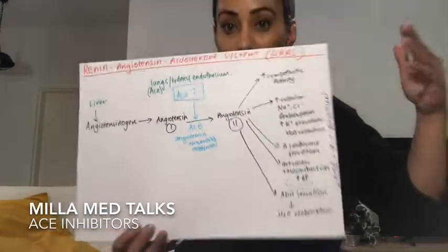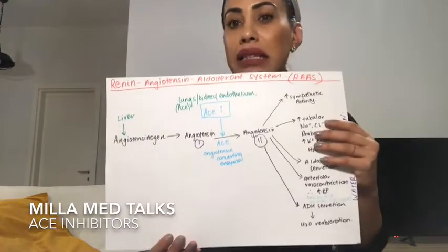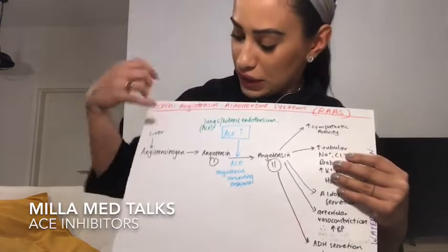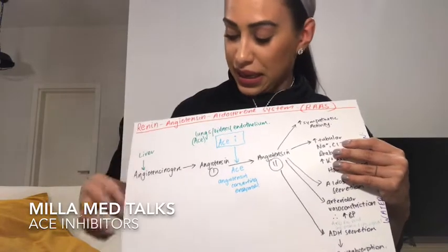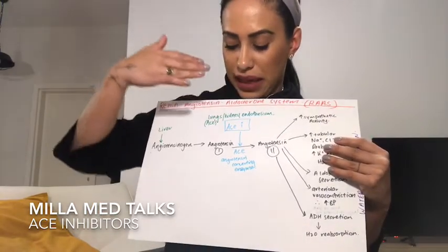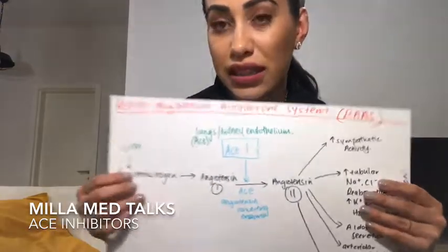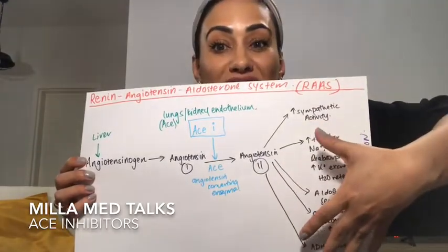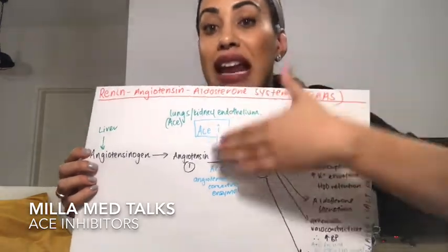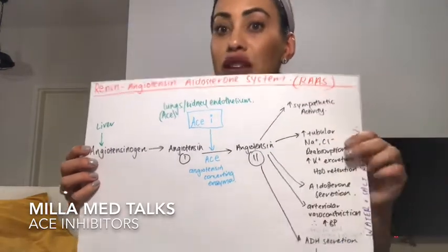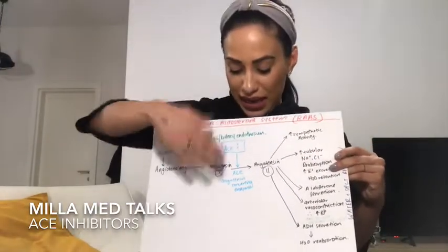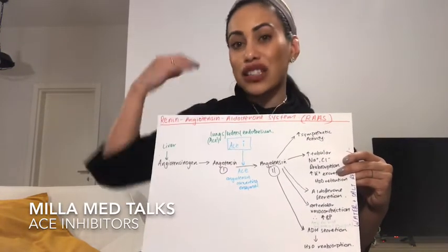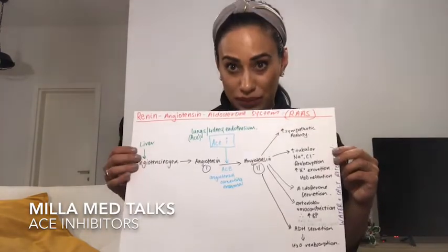So what ACE inhibitors do is they work on the angiotensin converting enzyme, which is produced in the lungs and the kidney endothelium. ACE helps to convert angiotensin 1 to angiotensin 2. If we want to stop this downstream effect — all these effects that angiotensin 2 has — we need to inhibit the conversion of it. That's where the ACE inhibitor comes in. It's going to competitively bind to the receptor on ACE and block the production of angiotensin 2.